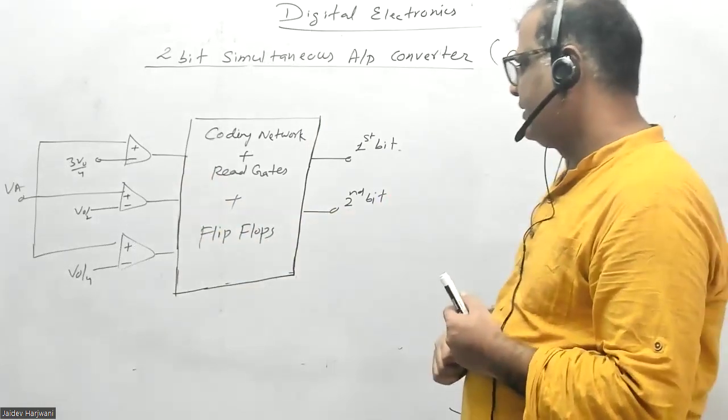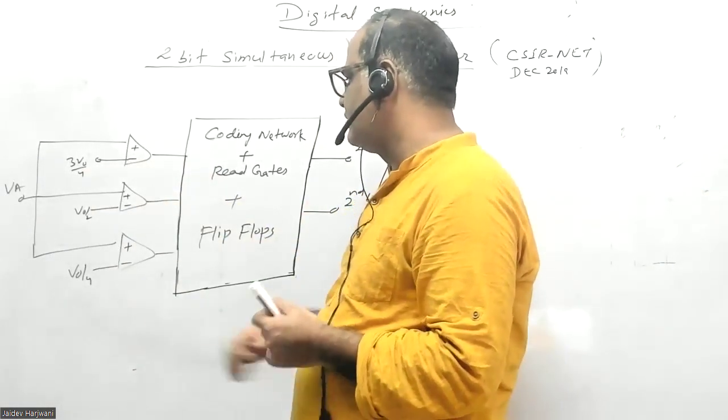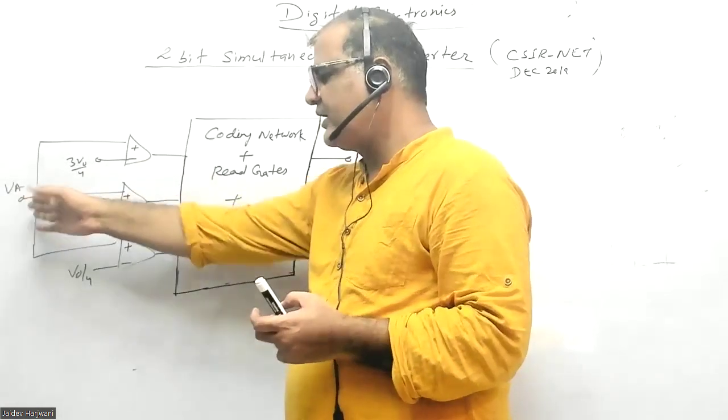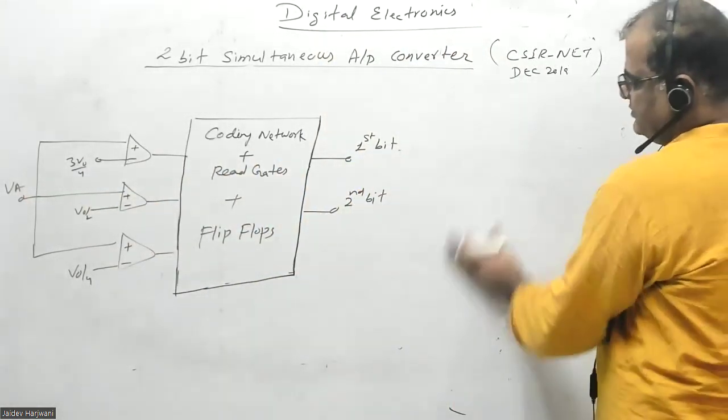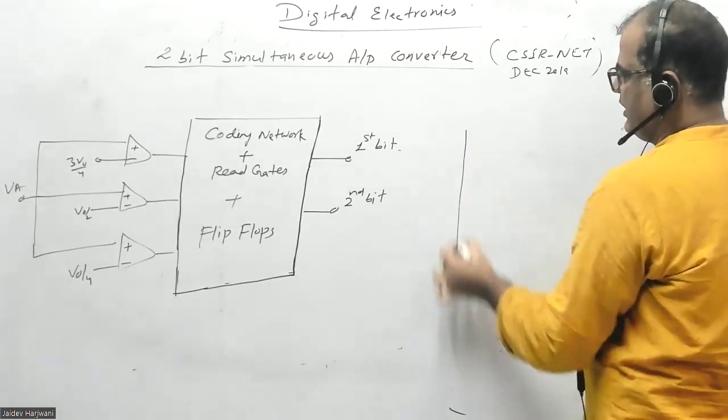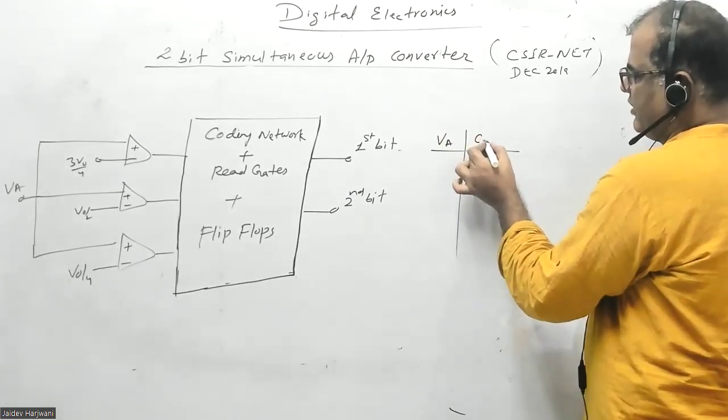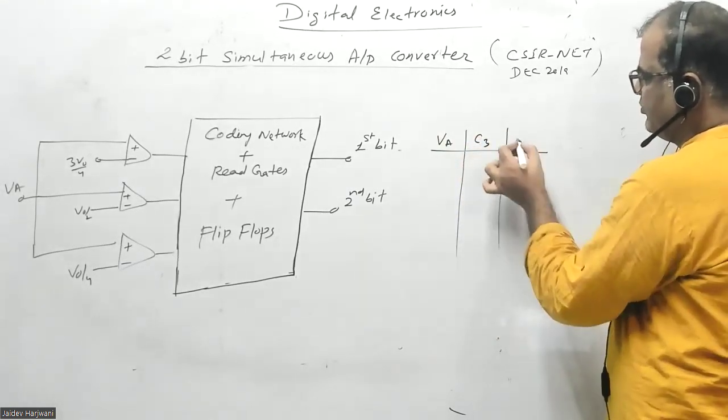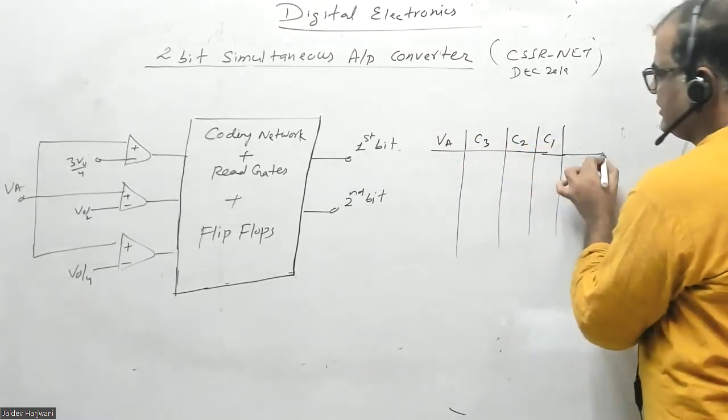Three comparators are given, some reference voltage is applied, and I want to apply some input and convert it into digital. We applied the voltage, and you have three comparator outputs C3, C2, C1.